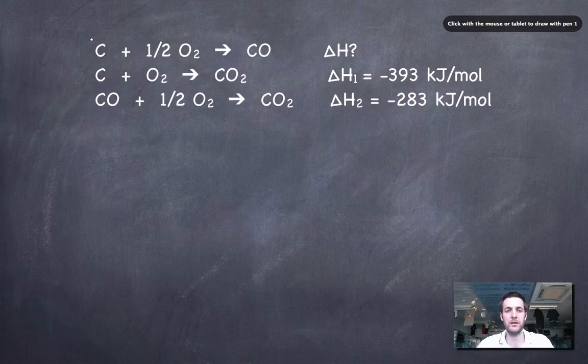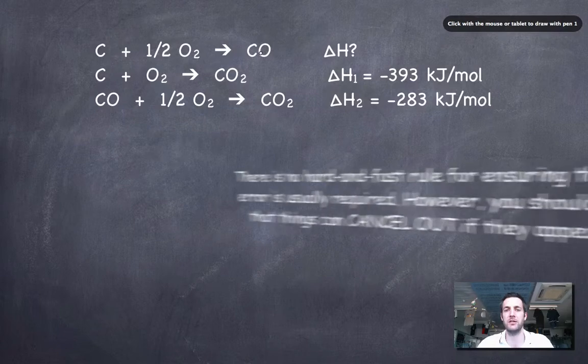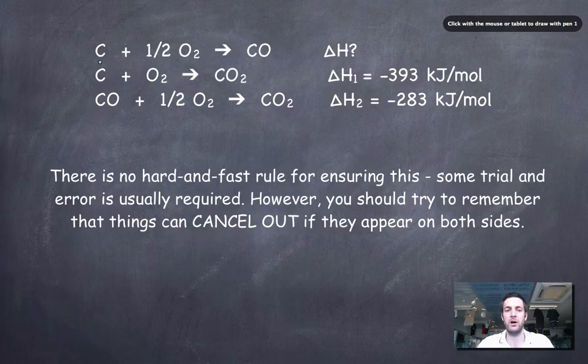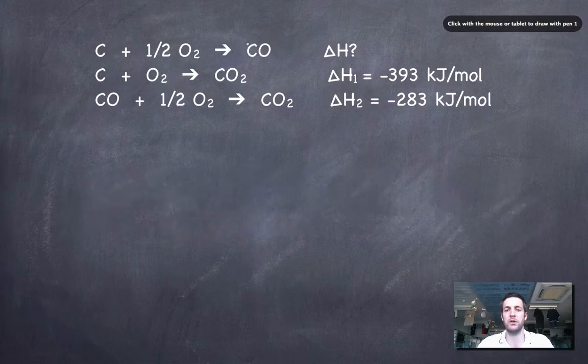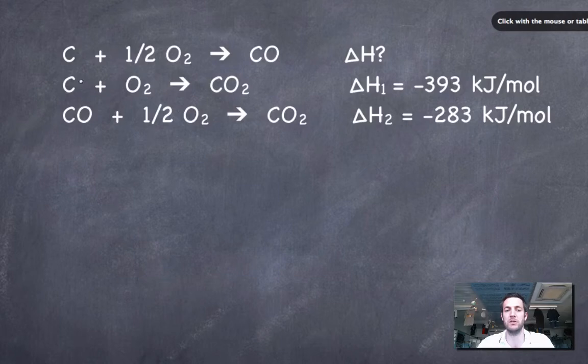Here is our reaction whose enthalpy change we don't know. What we want to make sure we've got from the other two equations is the same substances on the left and right hand side of the arrow. We've got carbon and oxygen on the left, carbon monoxide on the right. This equation has carbon and oxygen on the left; it's got carbon dioxide on the right. This carbon dioxide isn't involved in this equation at all, so it doesn't really matter what side it's on, but we'll leave this one the same way round because it's got carbon and oxygen on the correct side.